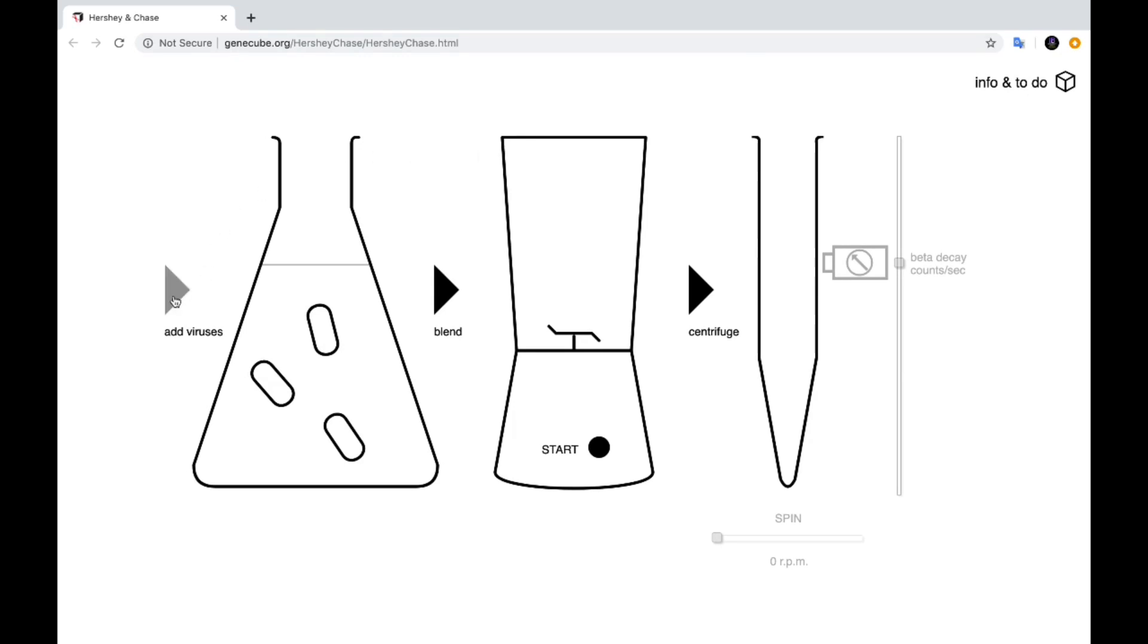So here I'll demonstrate what happens when you add the radioactive sulfur or 35S to the viruses. So they infect the bacteria and the blending here separates the external protein coat of the viruses from the bacteria that they have infected and then we use the centrifuge in order to separate out the protein coats of the viruses.